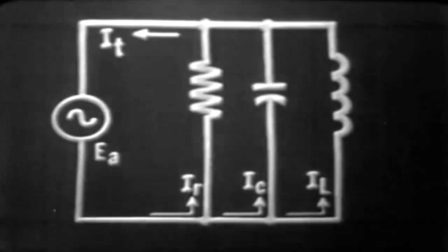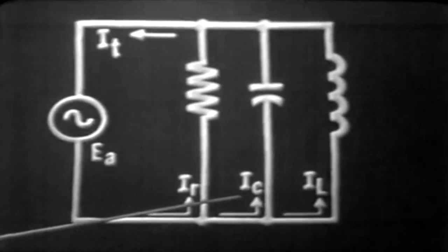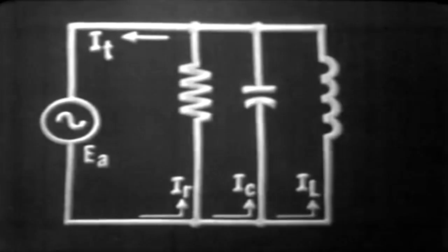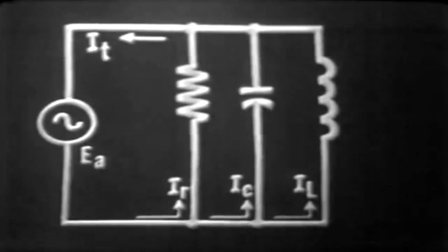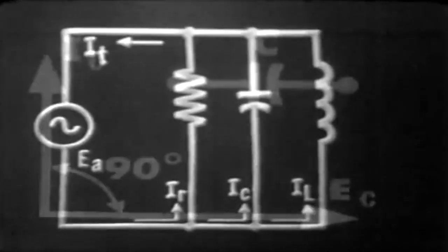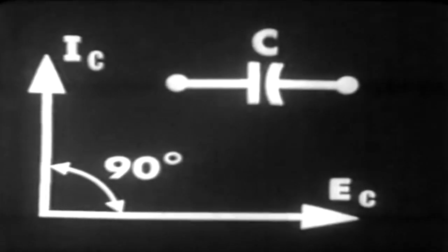Our next current would be our capacitive current, IC. We know that the voltage across and the current through any pure capacitive component is 90 degrees out of phase. That is, the current leads the voltage by 90 degrees. IC leads EC by an angle of 90 degrees.